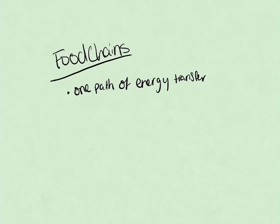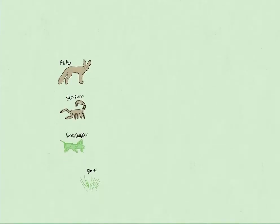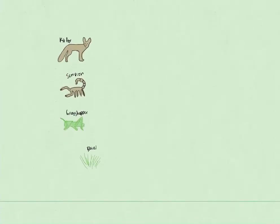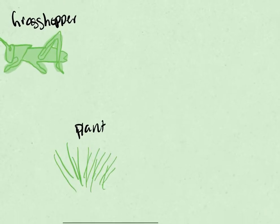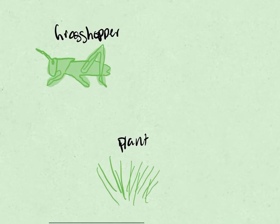An example of a food chain would look something like this. So to start off with, we have the plant here, which is our producer, and that plant transfers its energy, so 10% of its energy, goes to the grasshopper.